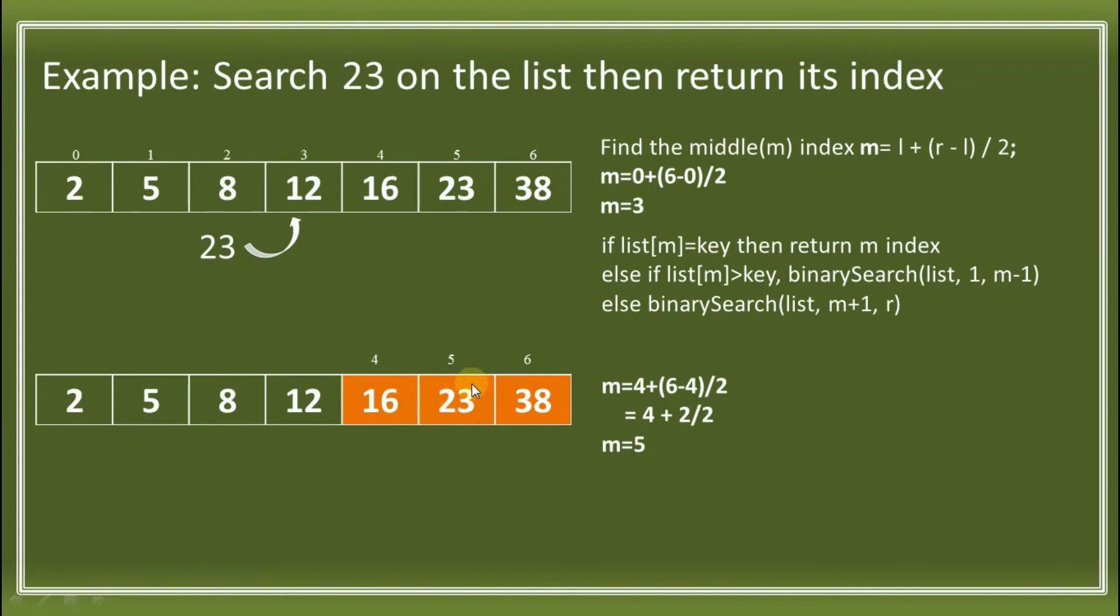With this, we'll ask again if that equals 23. We go back to the conditions. List[m] equals key. Is 23 equals 23? That is true. That means 23 is found at index 5.